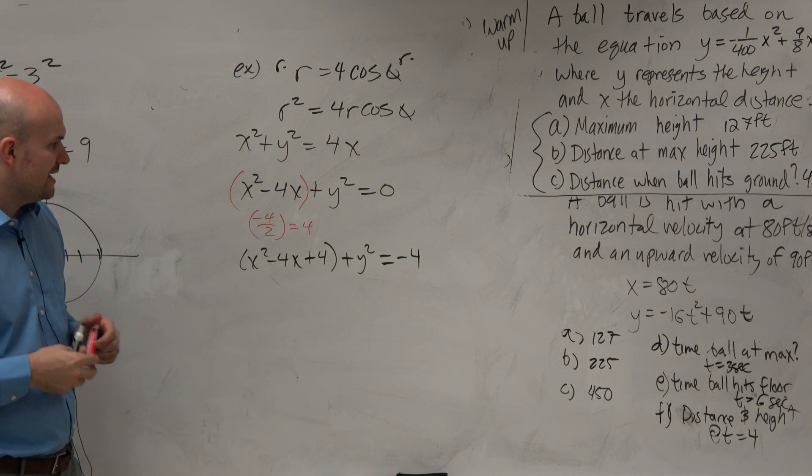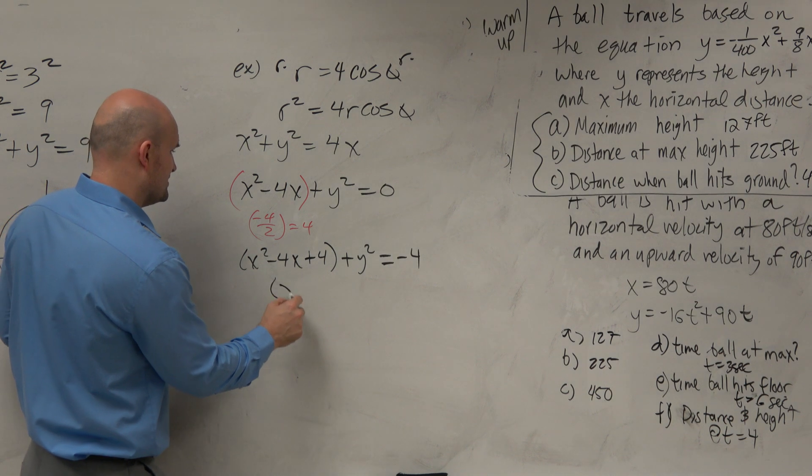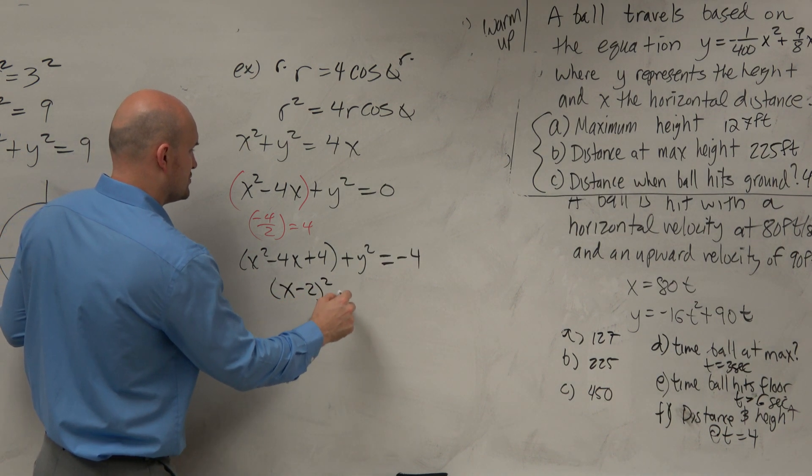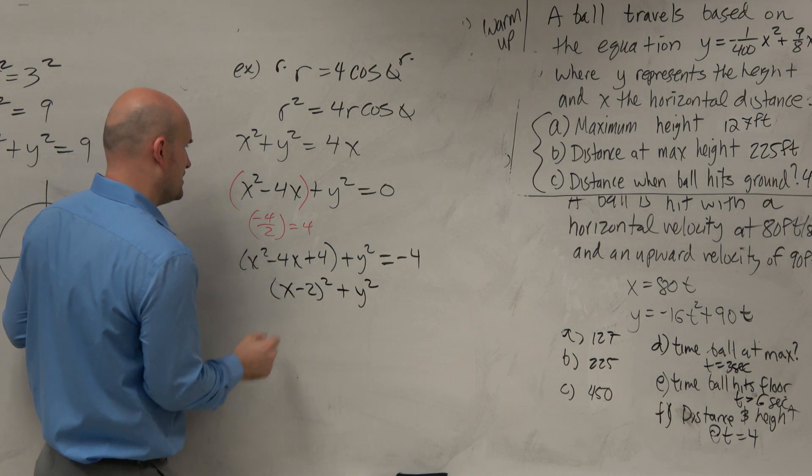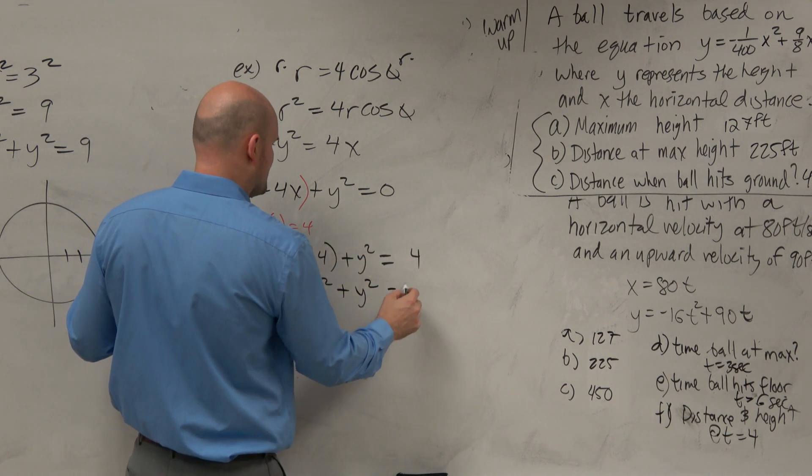Now I can go ahead and complete the square here. So this becomes x minus 2 squared plus y squared. Oh, I'm sorry. I'm supposed to add that, not plus. x minus 4 equals 4.